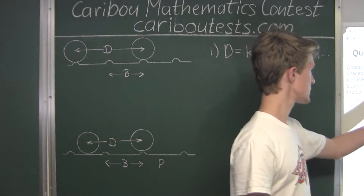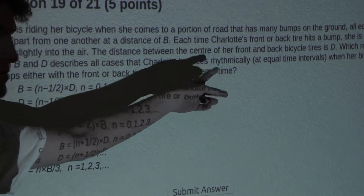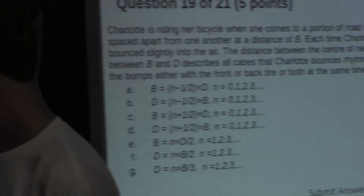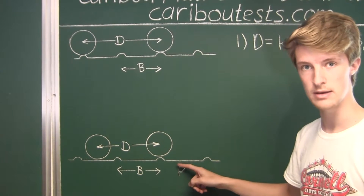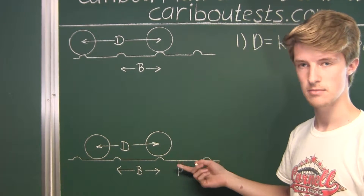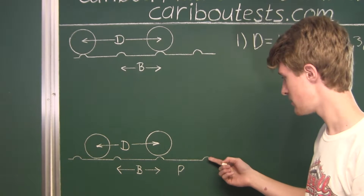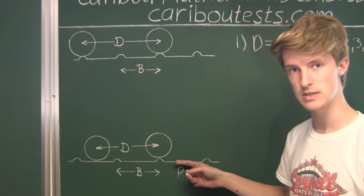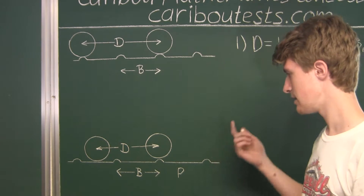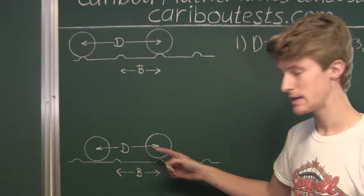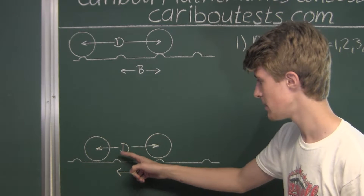Now, from the question, it states Charlotte bounces rhythmically at equal time intervals. So therefore, the time it takes for the front tire to get from the top of the bump to point P is the same amount of time it takes for the front tire to leave from point P and get to the next bump. Therefore, that point P must be exactly in the middle of the two neighboring bumps. And that means when the front tire is at point P, which is in the middle of the two bumps, the back tire is then on top of a bump.